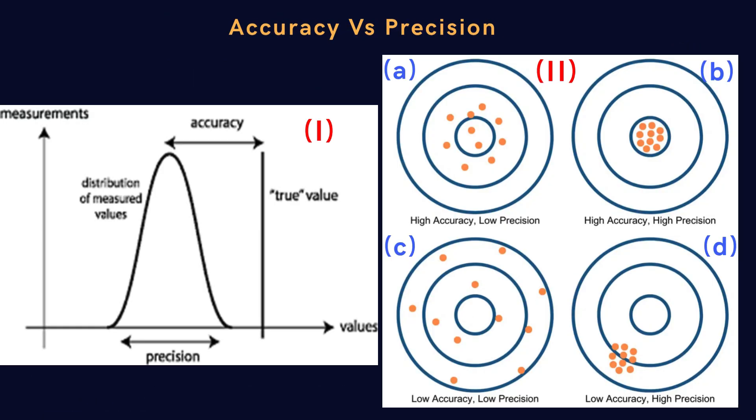Now here we understand the difference between accuracy and precision. On the image, first, we see a graph that represents the distribution of measured values compared to the true value. Accuracy refers to how close a measured value is to the true or accepted value. Precision, on the other hand, indicates how close repeated measurements are to each other, regardless of whether they are close to the true value.